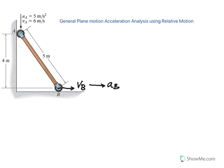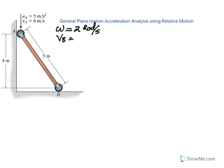Acceleration of B could actually be pointing to the left — we'll determine that. Based on the instantaneous center, we already determined that omega of this rod is 2 radians per second. I suggest you go back and see the previous video for that derivation. We also determined velocity of B to be 8 meters per second to the right.